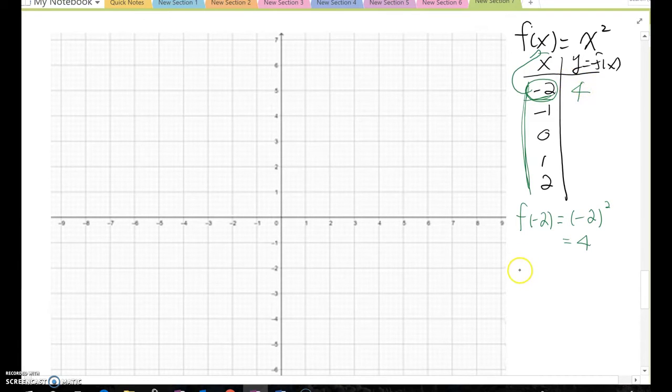Let's do one more. What is f(-1)? Then it becomes (-1)², which is one. If I do all the similar procedure when x equals zero, one, and two, you will get zero, one, and four.